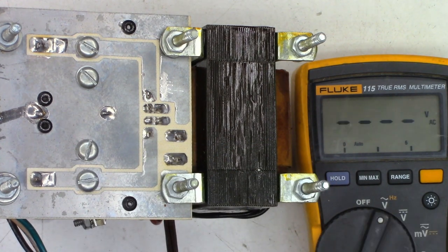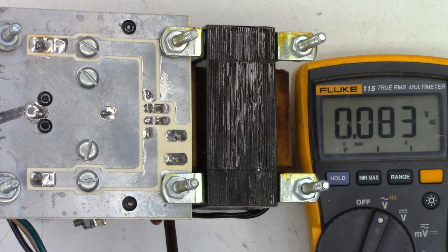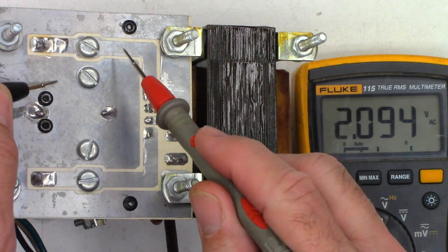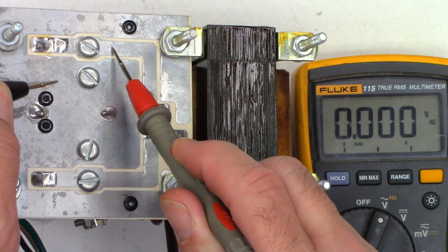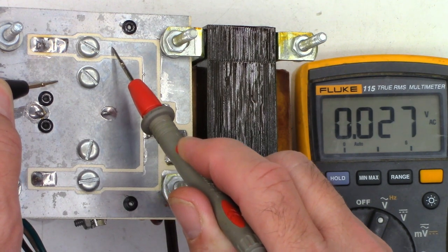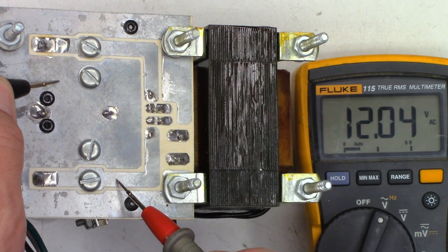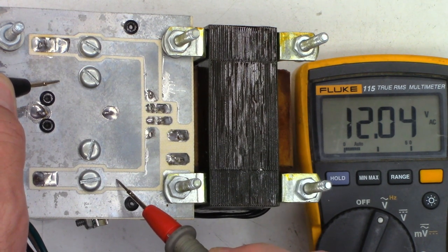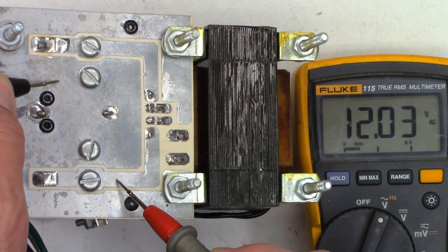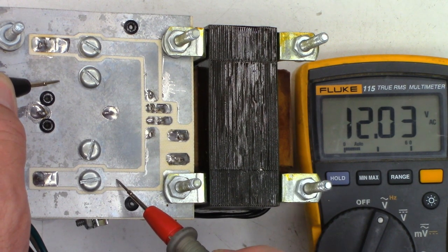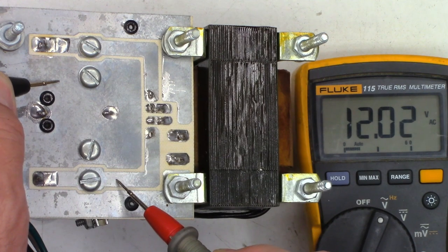Let's go ahead and go to the AC range and we'll look and see if we have any ripple across that capacitor. First, the one that has the higher voltage and we have basically zero volts of AC ripple. Next, the one that had the lower voltage and we have 12 volts of AC ripple. That tells me right there that capacitor is bad. I'm going to power the unit down to get the ESR meter out and we'll do an ESR test on the capacitor.